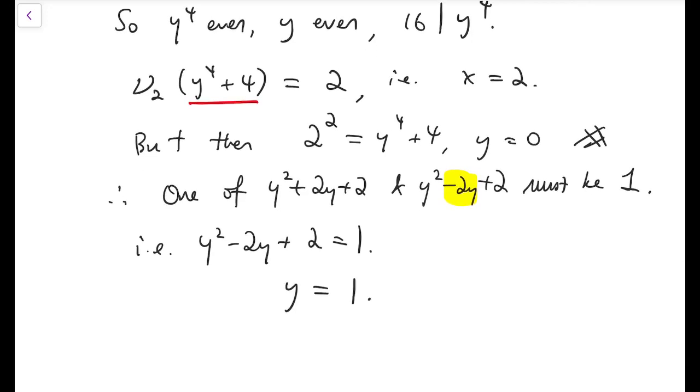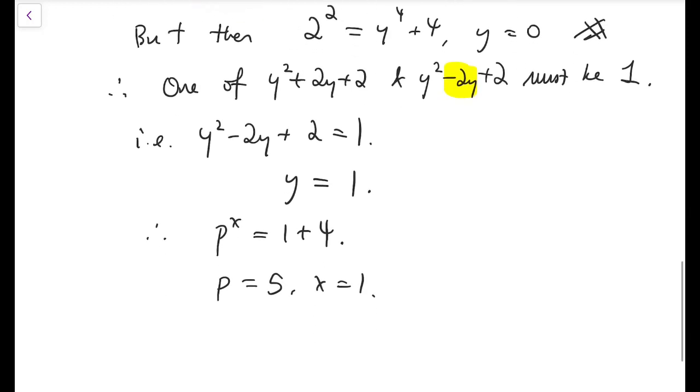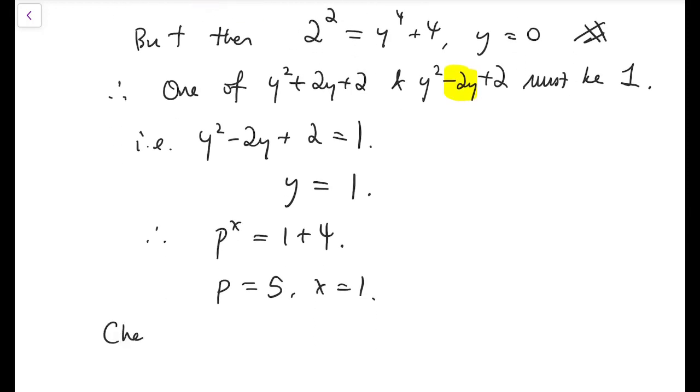And there's a very easy quadratic equation. So we get y equals 1, and so therefore, p to the x equals 1 plus 4, and so p equals 5, and x equals 1. So to conclude, p equals 5, x equals 1, y equals 1, and checking, p to the x equals 5, and y to the 4 plus 4 is also 5.